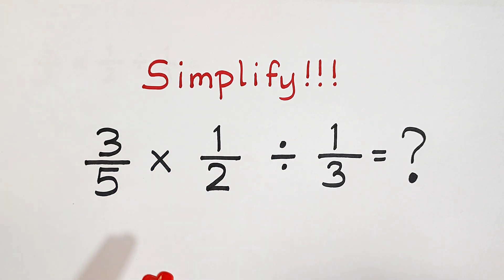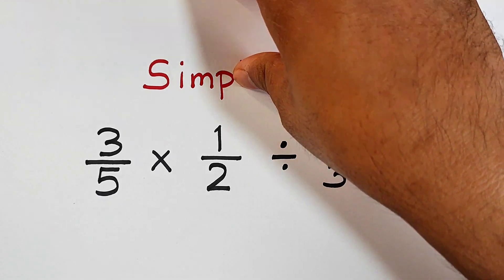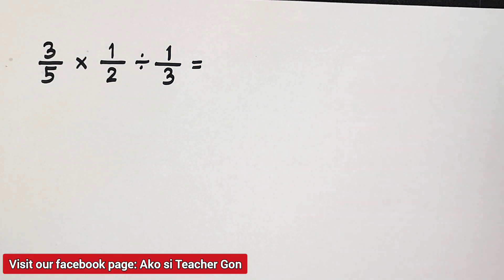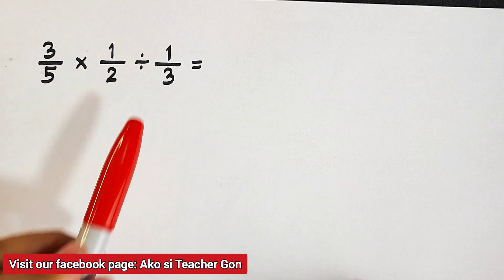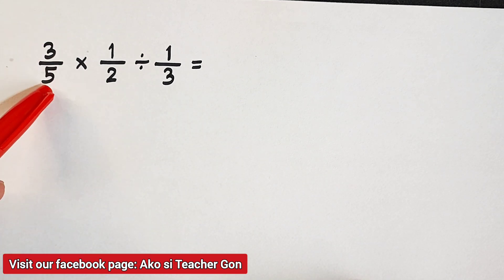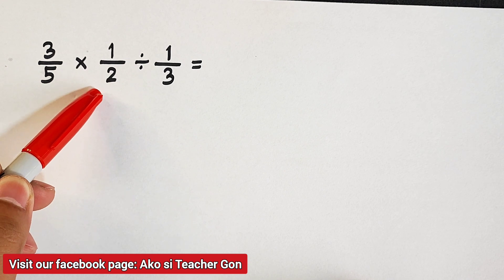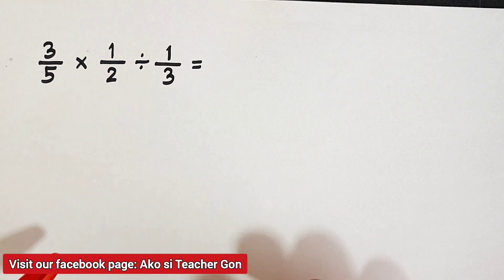Do you know how to do it? Now let's try and simplify. So what we have here is a given expression wherein it is a mixed operation between multiplication and division. We have 3 over 5 times one-half divided by one-third. I will give you two different methods on how to do it.